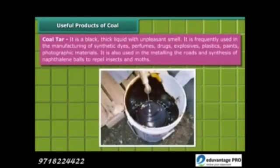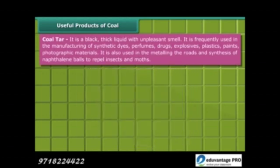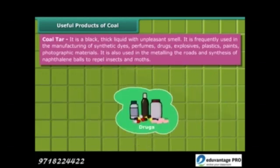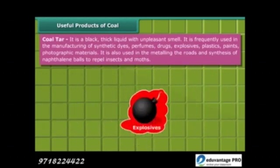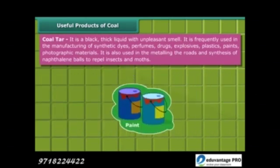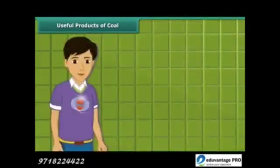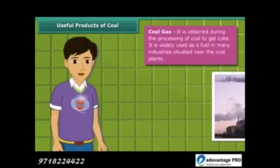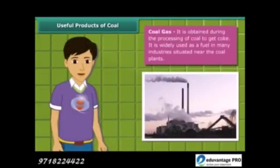Coal tar is a black, thick liquid with an unpleasant smell. It is frequently used for manufacturing of synthetic dyes, perfumes, drugs, explosives, paints, plastics and photographic materials. To obtain coke from coal, coal gas is produced. In many industries located near coal plants, it is used as a fuel.